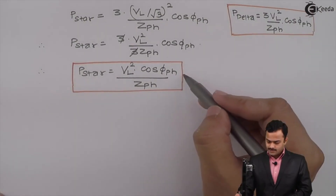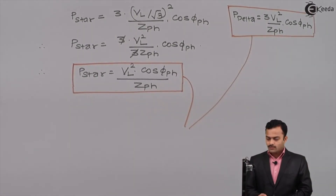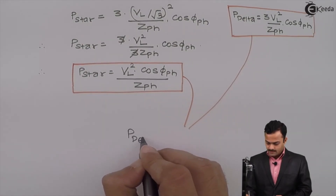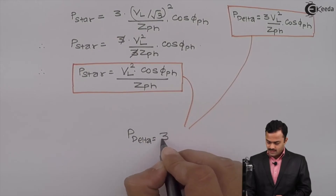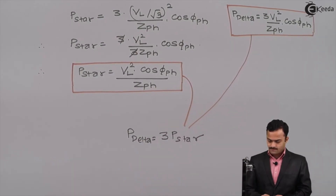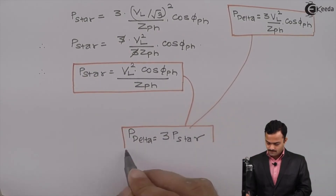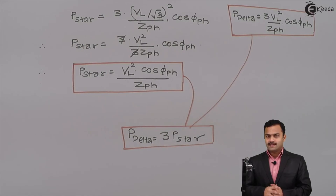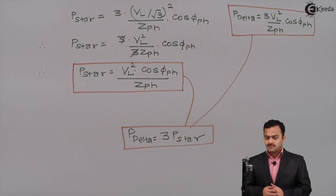Now if we compare these two expressions, we get P_delta equals 3 times P_star. This means that for the same line voltage and same load impedance in magnitude and phase angle, if I change the arrangement from star to delta, my power will increase 3 times. So power consumed in delta is 3 times power consumed in star.